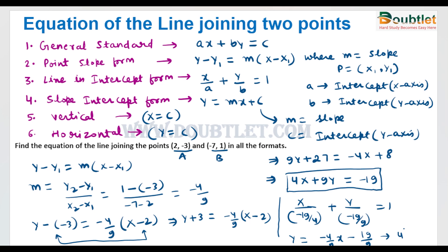To summarize: the slope-intercept form is the fourth type, the intercept form is the third type, the general standard form is the first type, and the point-slope form is the second type. This is how we have covered all formats of the line obtained by joining two points whose coordinates are given.